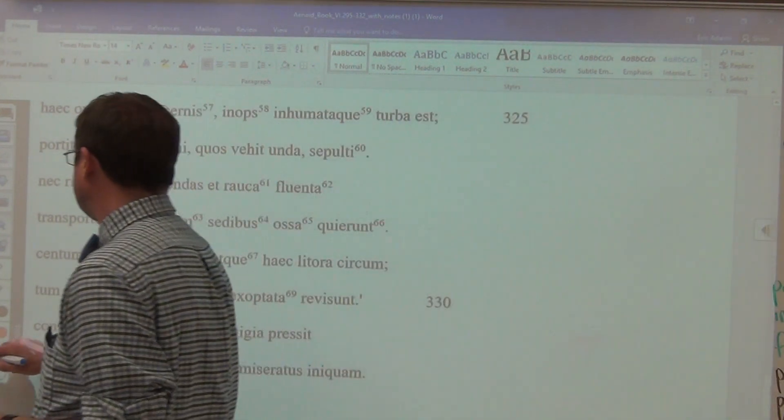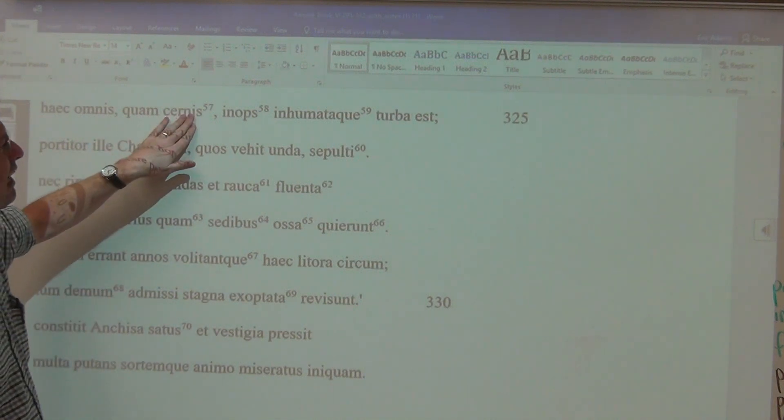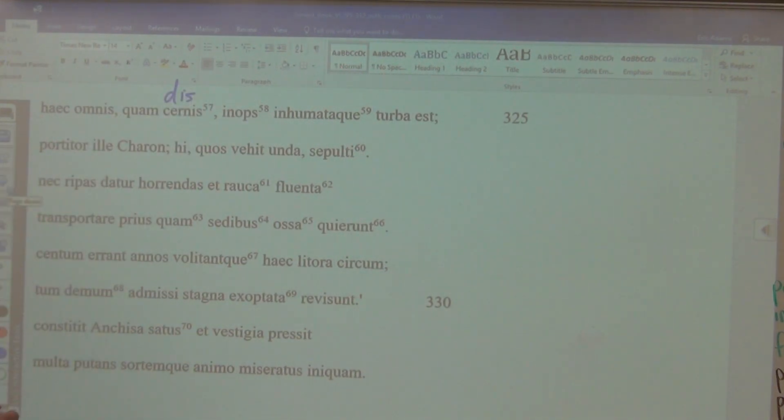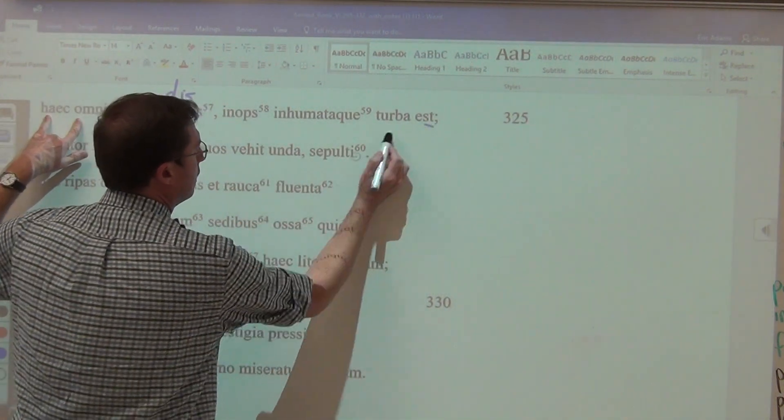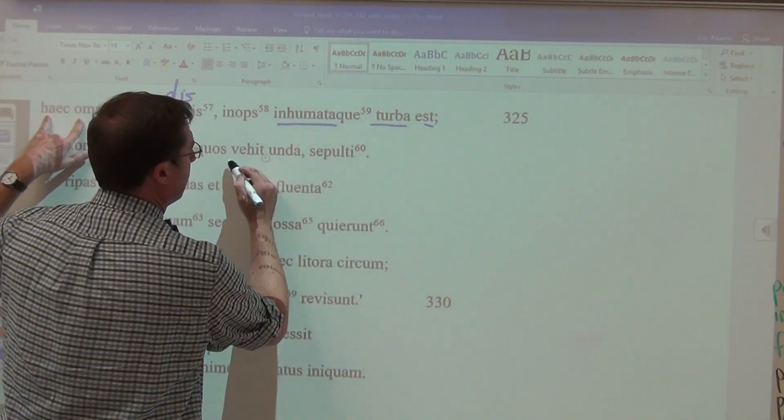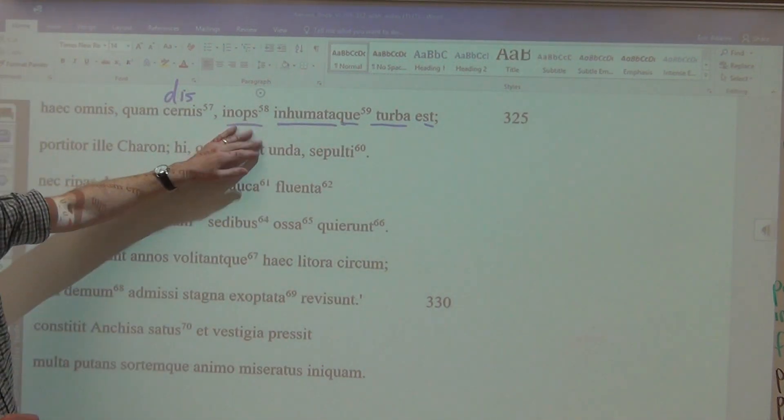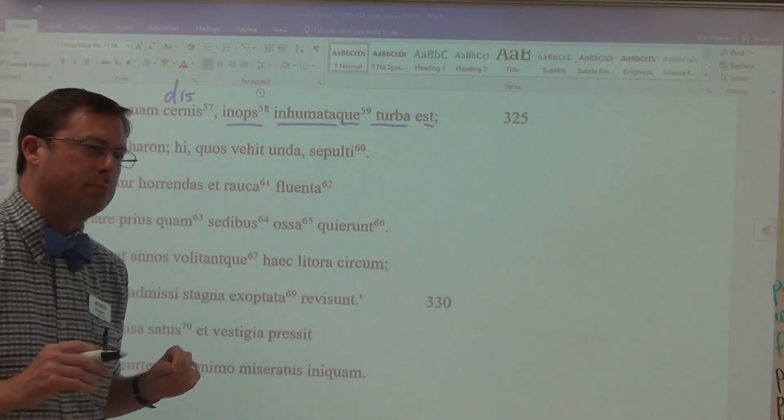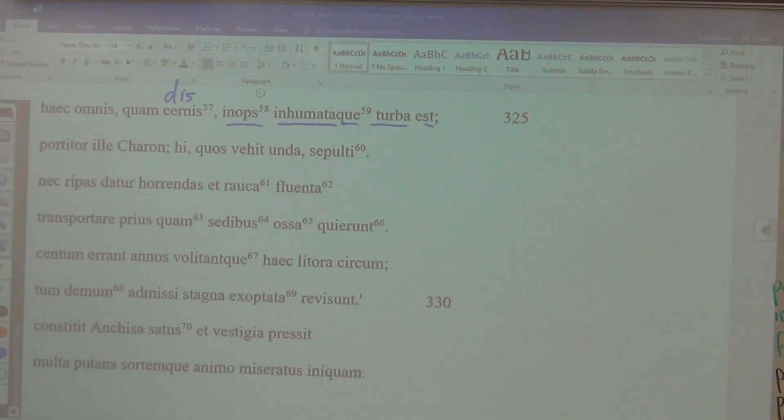The river Styx, when you swear upon it, it is an unbreakable oath, even for the gods themselves. It is just that powerful. And so again, you see the Stygian swamp. Continuing on. All this which you see, cerno cernere, where we get the word discern. If you are discerning, that means you can see stuff. All this which you see, all this is the unburied crowd and the in-need crowd. Inops means in-need or needy. And so the people who are gathering up at the shore, that's the group of people that are obviously in-need and unburied, not having been buried.